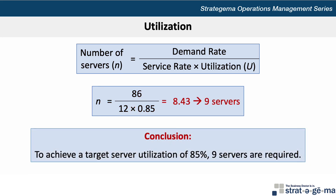Our conclusion then is that in order to achieve a target utilization of 85%, 9 servers are required.